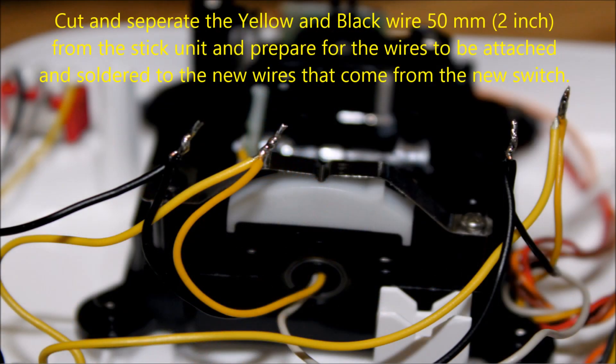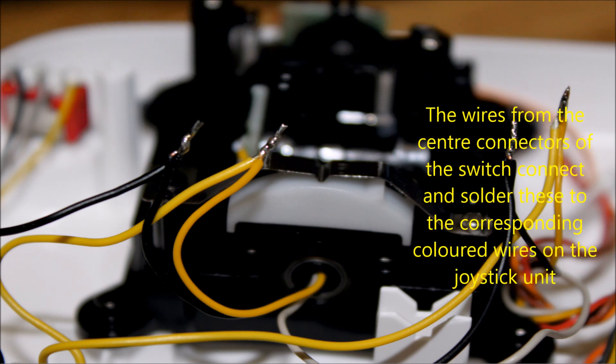Cut and separate the yellow and black wire 50mm or 2 inches from the stick unit and prepare the wires to be attached and soldered to the new wires that came from the new switch. The wires from the centre connectors of the switch connect and solder these to the corresponding colored wires on the joystick unit.